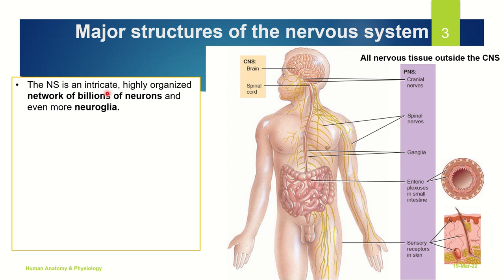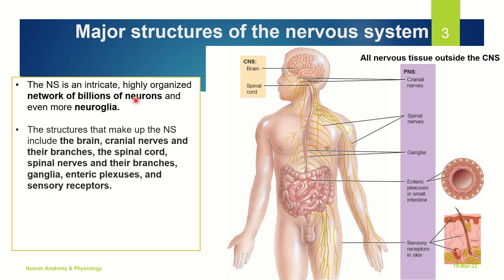The nervous system is an intricate, highly organized network of billions of neurons and even more neuroglia. The structures that make up this nervous system include the brain, the cranial nerves and their branches, the spinal cord, the spinal nerves and their branches, ganglia, enteric plexuses and sensory receptors.